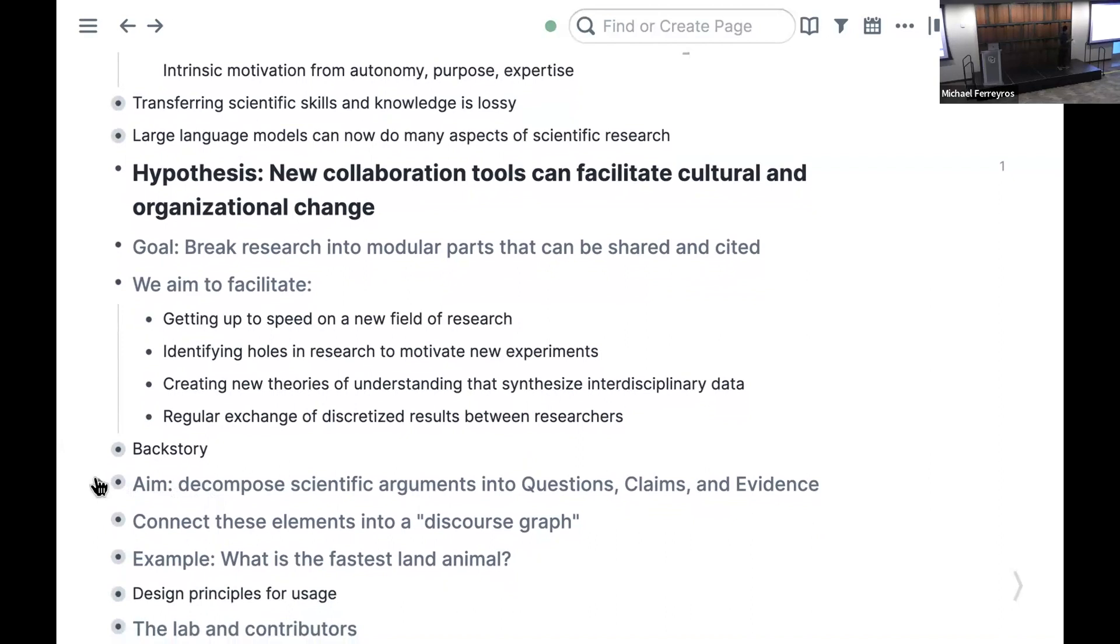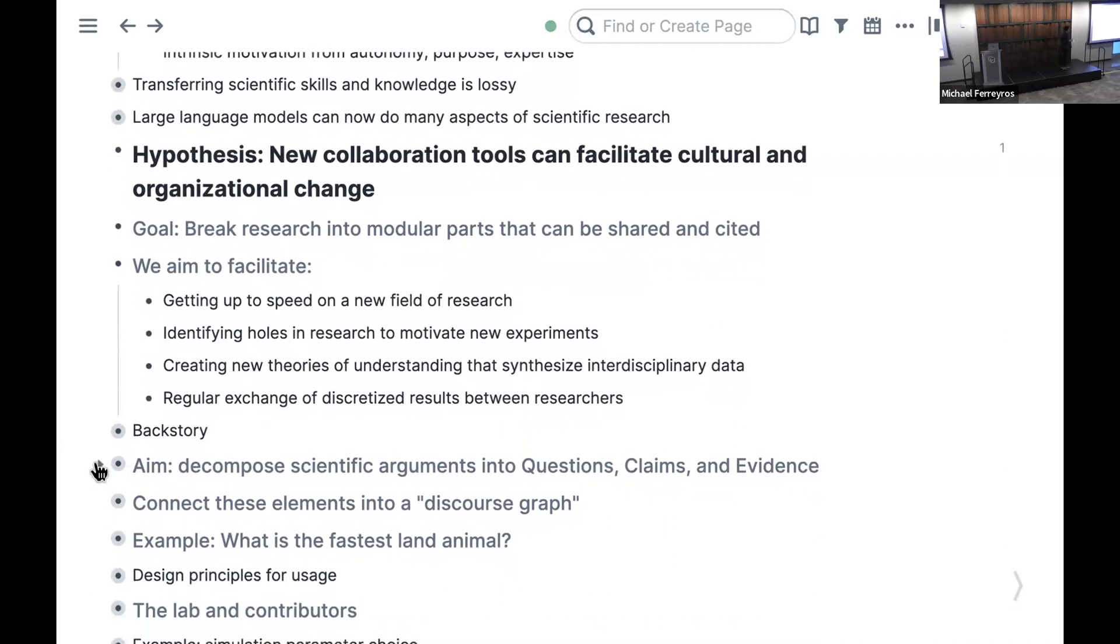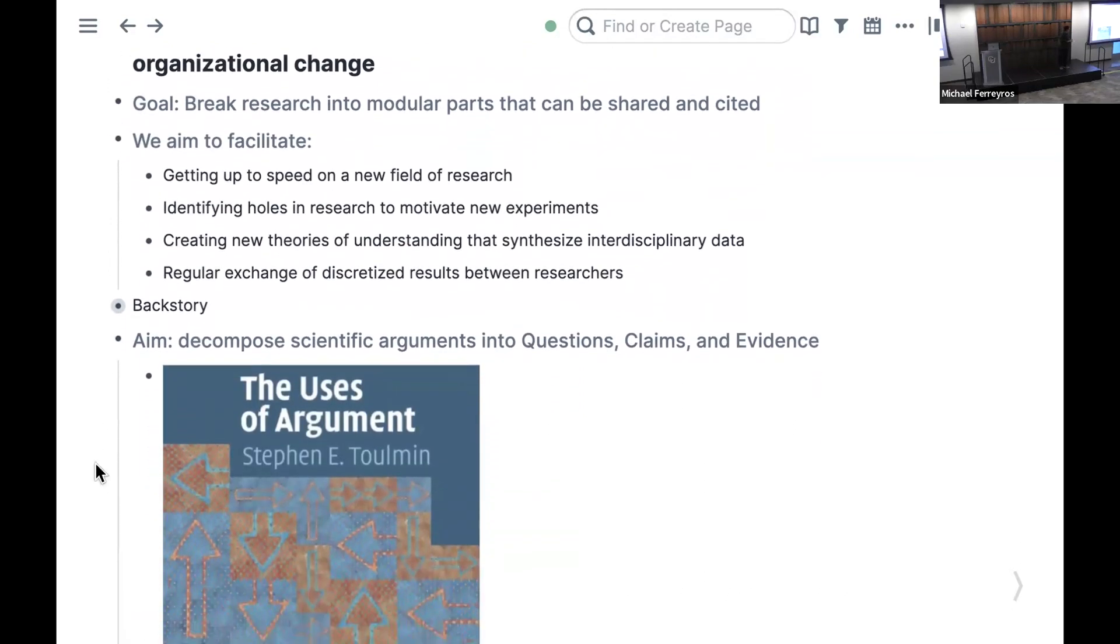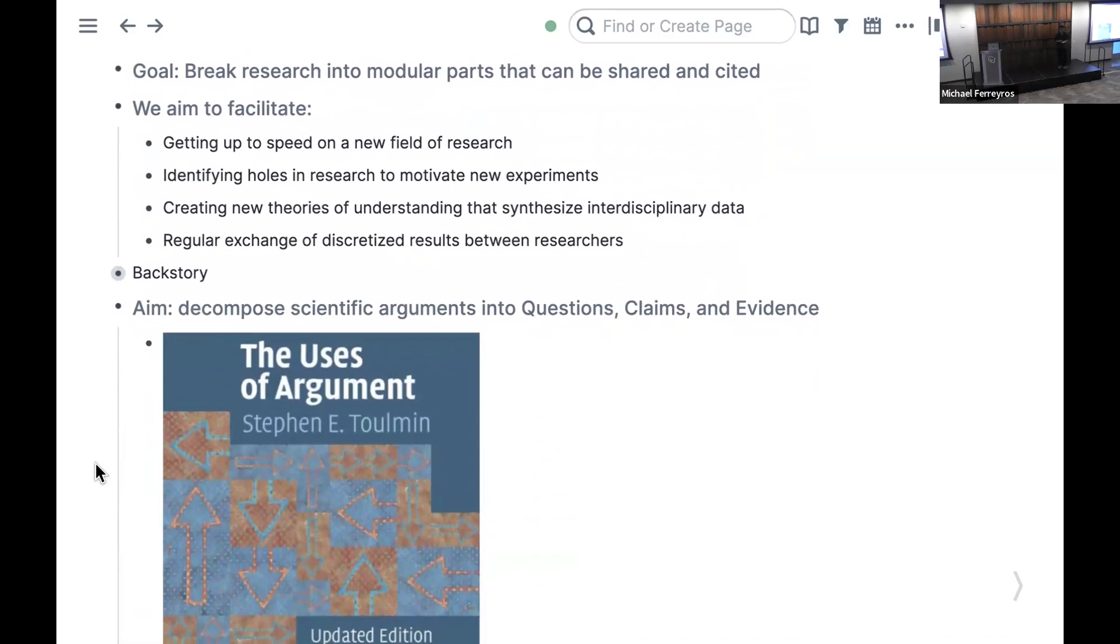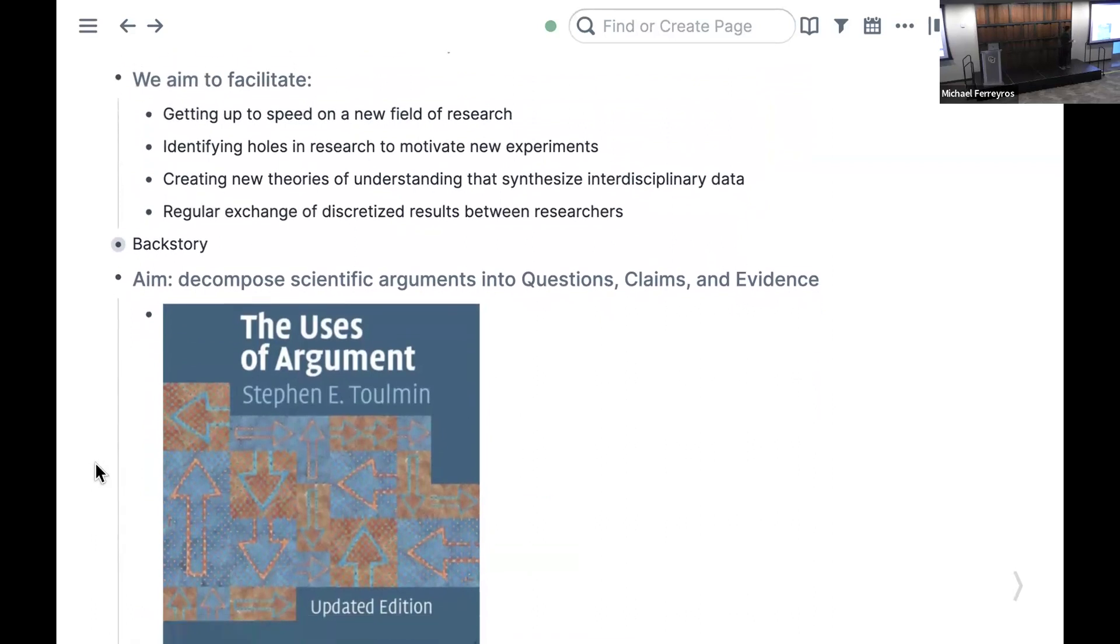We decided to decompose the scientific argument into its atomic units and connect them into a graph. Scientific arguments in empirical science can be broken down into questions, claims, and evidence. This comes from science philosopher Stephen Toulmin, who contended that science isn't about universal truths. Instead, it's about a bunch of claims supported by more or less evidence. The textbook has the best claims, but the textbook changes over time as new evidence arises.